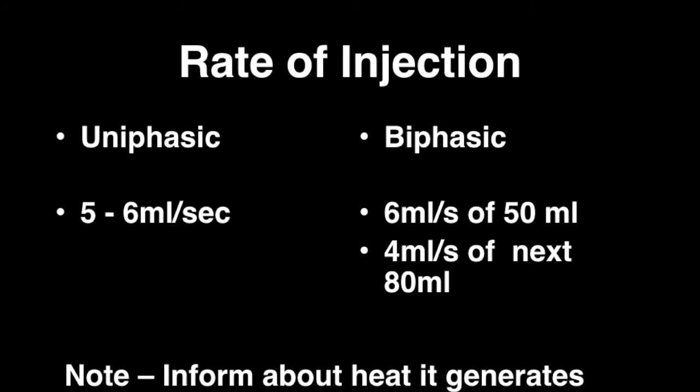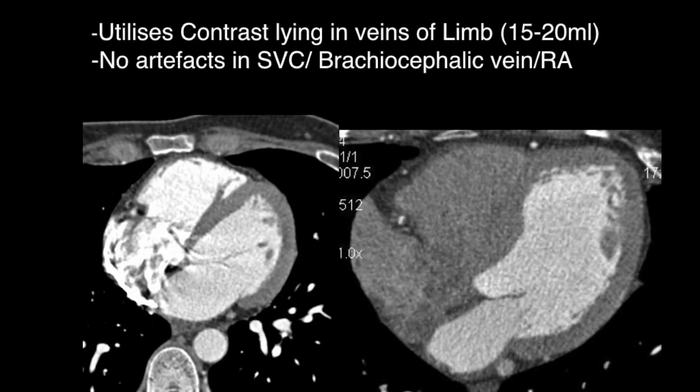While giving the breath hold instruction, we also inform the patient about the heat that the contrast will generate in the body, especially in the groin region, which helps with patient compliance. The saline chaser is important: it pushes extra contrast that would otherwise remain in the veins of the extremity so that contrast is completely utilized. Secondly, it reduces artifacts caused by contrast in the right heart — flushing the superior vena cava, brachiocephalic vein, right atrium, and right ventricle — enabling better visualization of the right coronary artery.